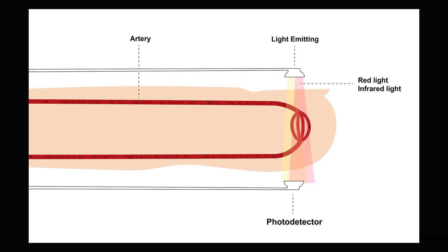How are we measuring this with a pulse ox? Here's our artery in the finger. On either side of that finger we have a detector and a light-emitting diode. The light-emitting diode sends red light and infrared light through the tissue — through that finger. On the other side, those lights are detected by the photodetector. Red light is taken up by the hemoglobin in direct proportion to how much oxygen has been bound to hemoglobin, so we can read our oxygen saturation.